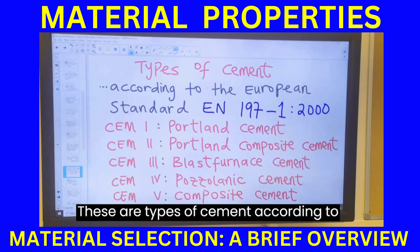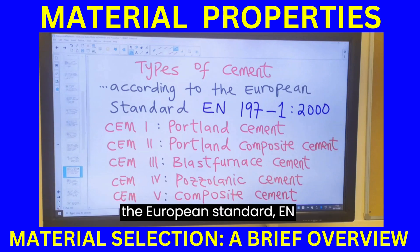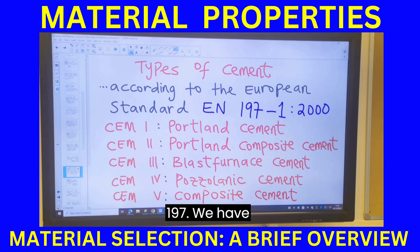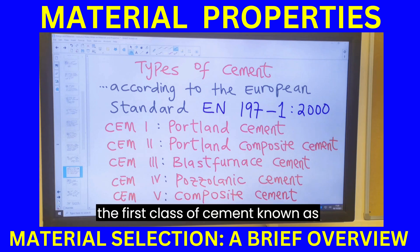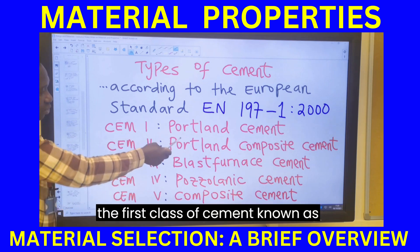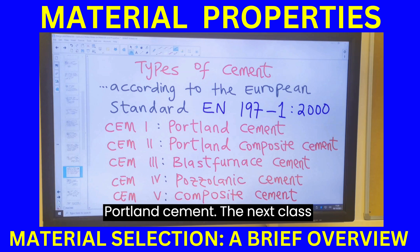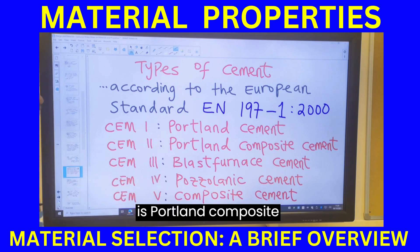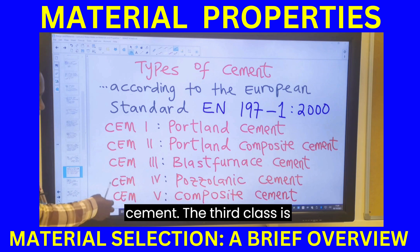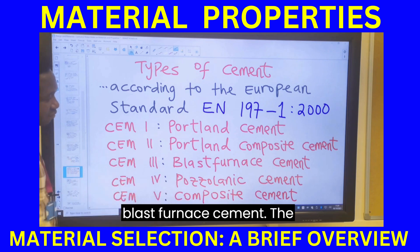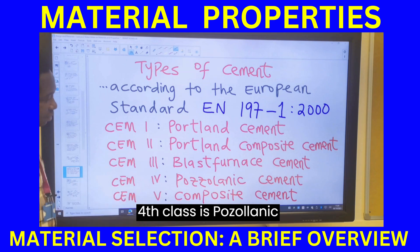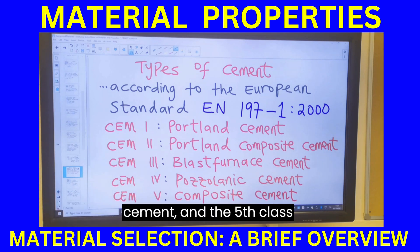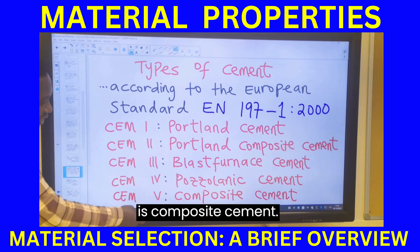These are the types of cement according to the European standard EN 197: the first class is Portland cement, the second is Portland composite cement, the third is blast furnace cement, the fourth is pozzolanic cement, and the fifth is composite cement.